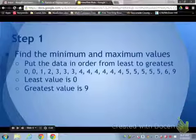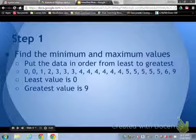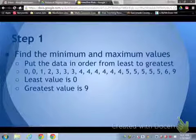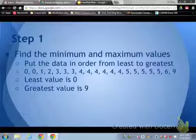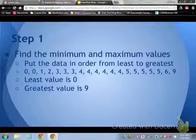Step 1, the first thing you do is find your minimum and maximum values so that you know which your smallest number you have to have on your line and the greatest number. So we put them in order from least to greatest, which I did here. Your least value is 0, your greatest value is 9.